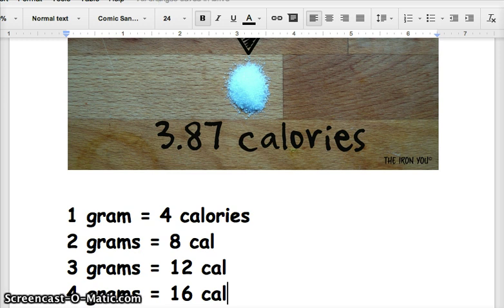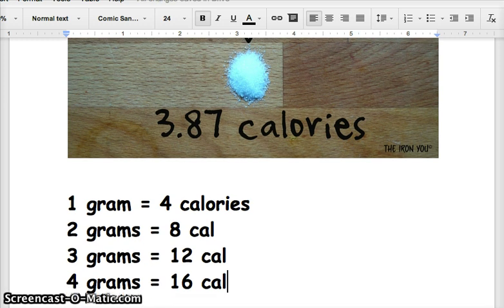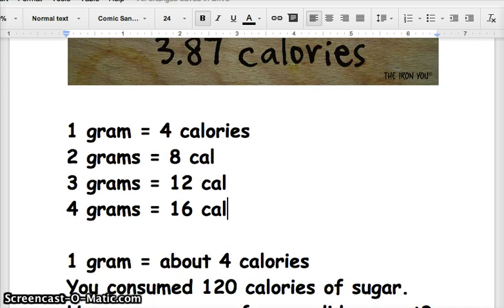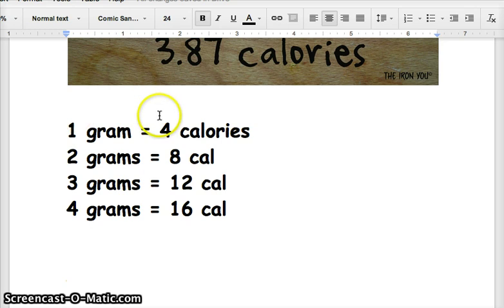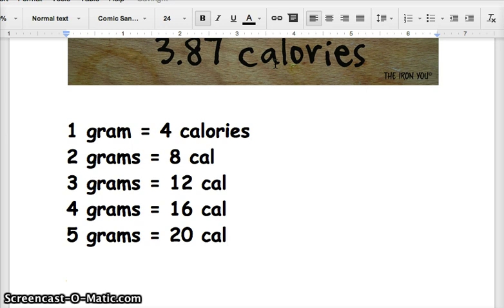You're probably starting to say, instead of adding four repeatedly, why don't we start to multiply? We notice that one times four is four, two times four is eight, three times four is twelve, four times four is sixteen. So we can conclude that we're taking the number of grams and multiplying by four, and that gives us the number of calories.